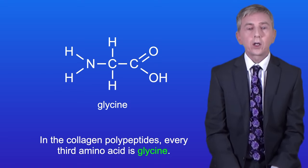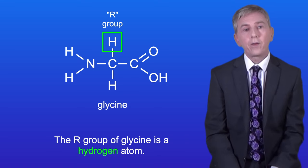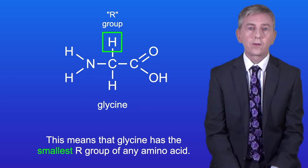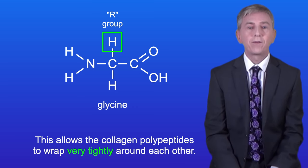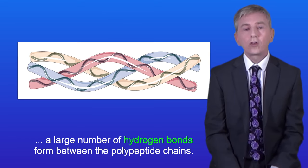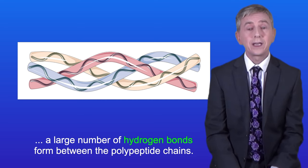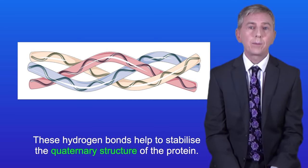In the collagen polypeptides, every third amino acid is glycine. The R-group of glycine is a hydrogen atom, meaning glycine has the smallest R-group of any amino acid, and this allows the collagen polypeptides to wrap very tightly around each other. As the polypeptides wrap around each other, a large number of hydrogen bonds form between the polypeptide chains, and these hydrogen bonds help to stabilize the quaternary structure of the protein.